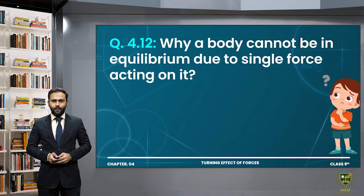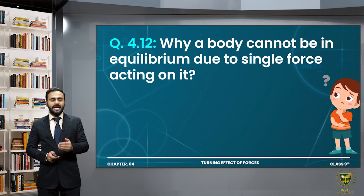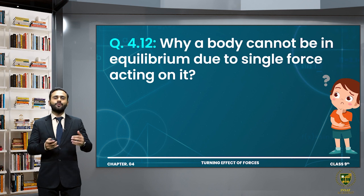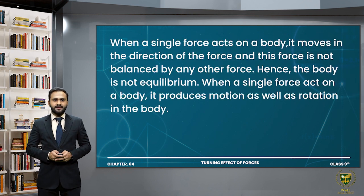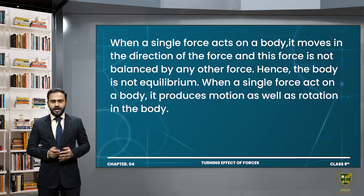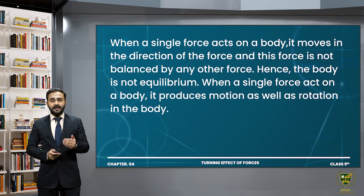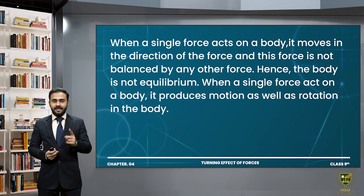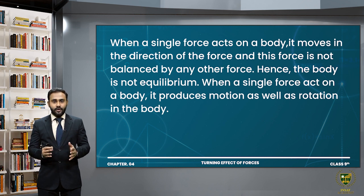Question 4.12: Why can a body not be in equilibrium due to a single force acting on it? When a single force acts on a body, it moves in the direction of the force and this force is not balanced by any other force — hence the body is not in equilibrium. A single force also produces motion as well as rotation in the body, so forces do not cancel out and the first condition of equilibrium is not satisfied.